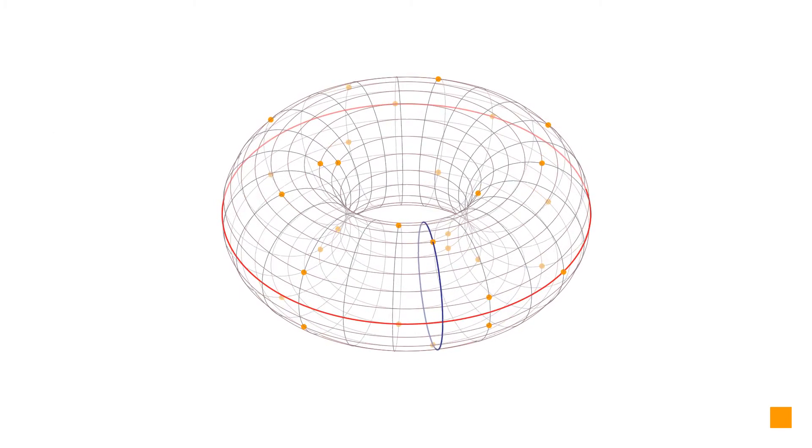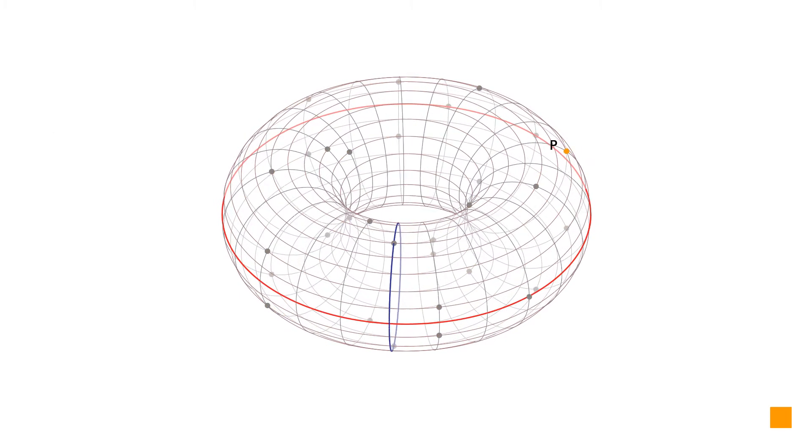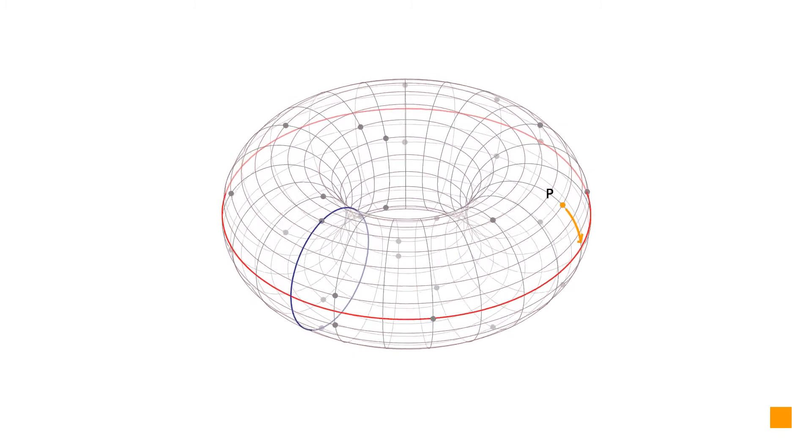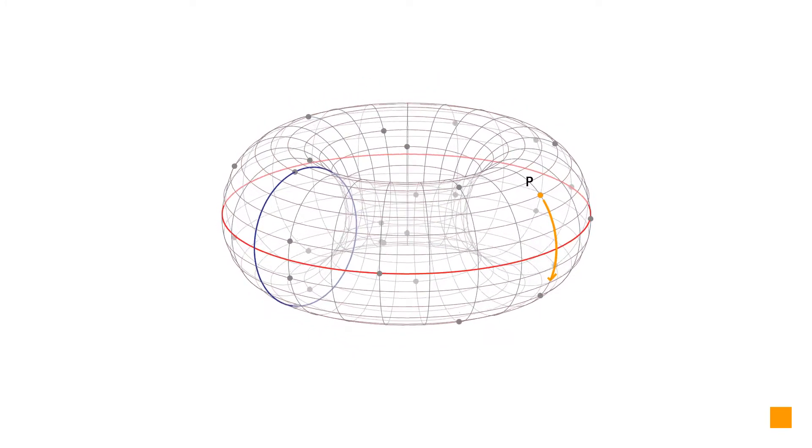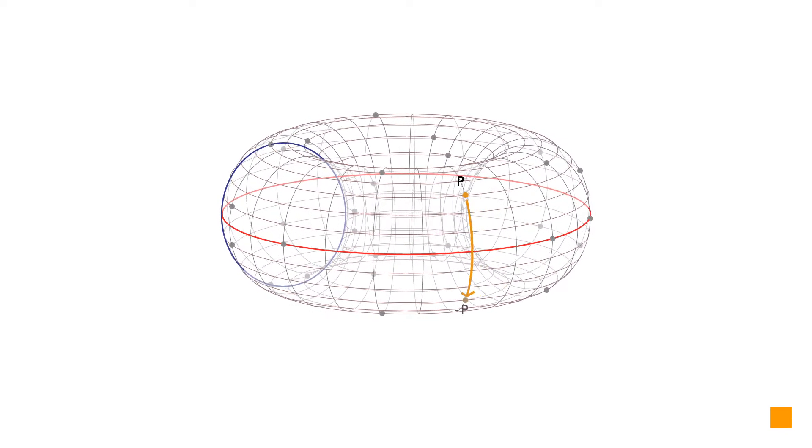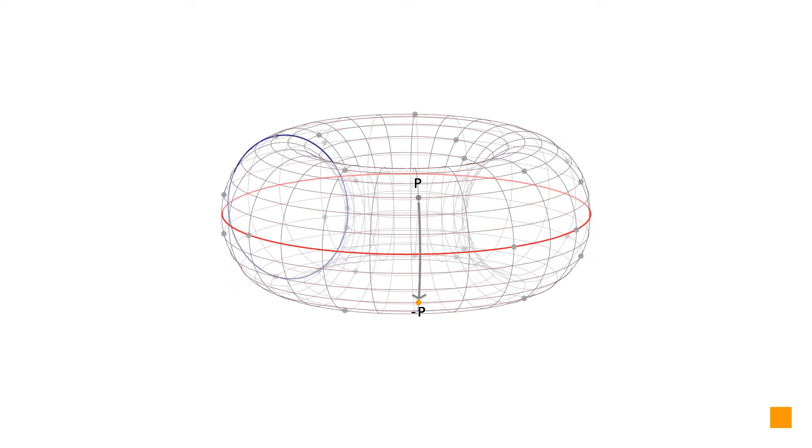For elliptic curve over a finite field the operation is similar. Any chosen point P from the set of rational points of the elliptic curve over a finite field can be flipped across the x-axis which runs along the torus representing the specified finite field. That gives us the resulting point minus P which is a negation of the original point.